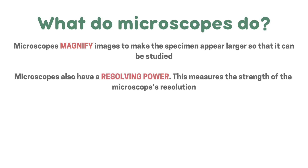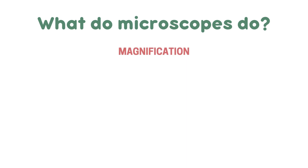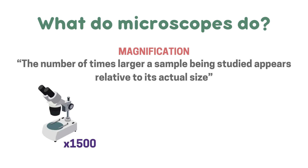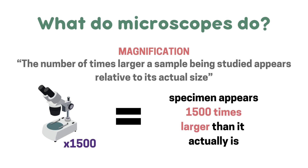Microscopes also have a resolving power, which measures the strength of the microscope's resolution. Magnification is the number of times larger a sample being studied appears relative to its actual size. For example, this microscope here has a magnification of 1,500, which means the specimen appears 1,500 times larger than it actually is.